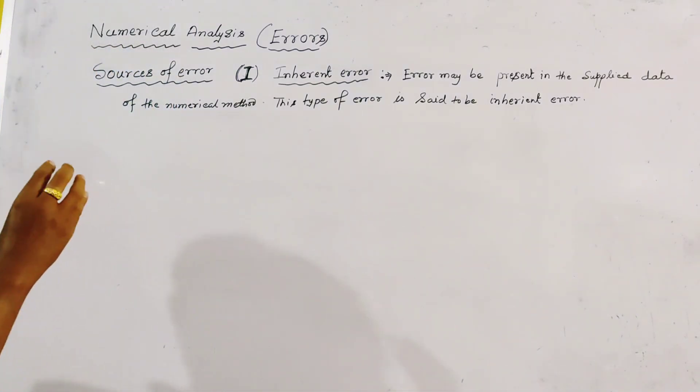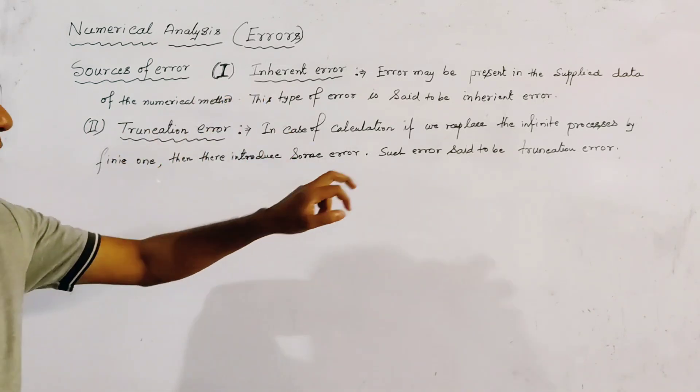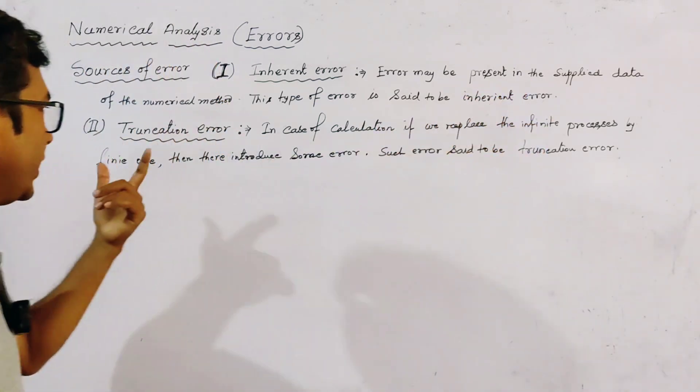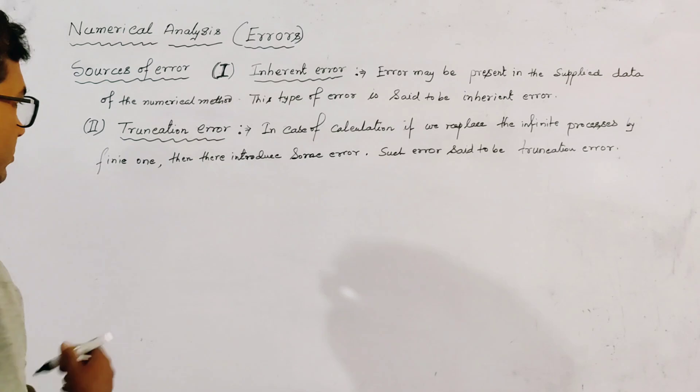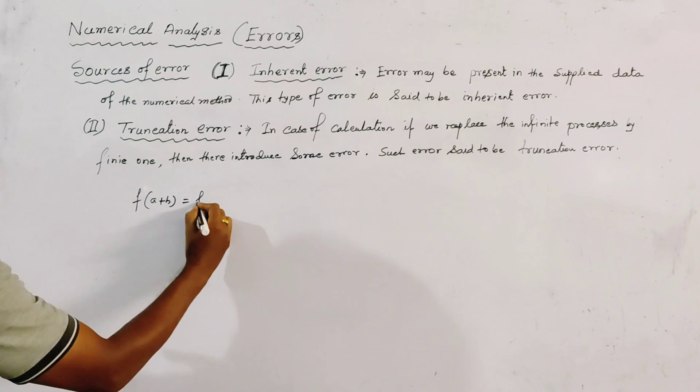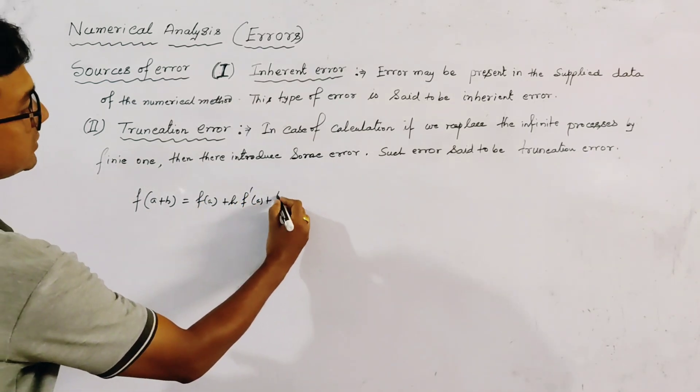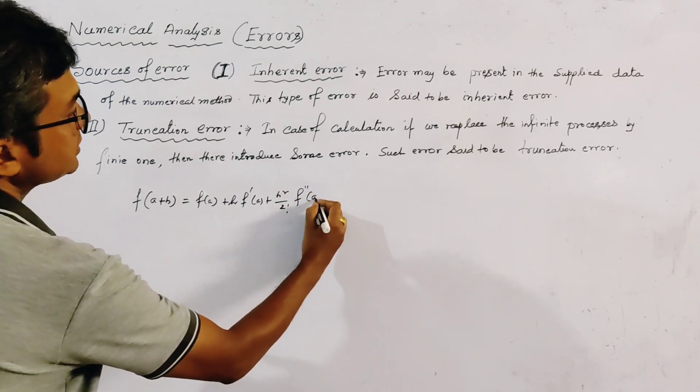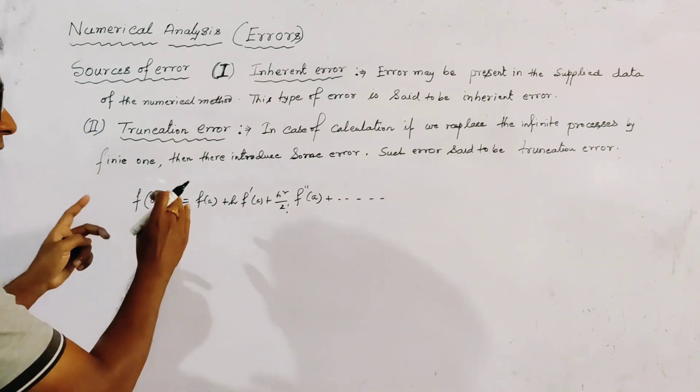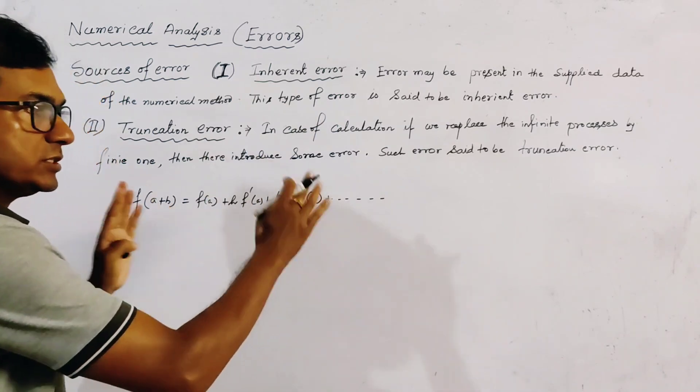And the second type is calculation error. In case of calculation, we sometimes replace an infinite process by finite one. Like if we write the Taylor's theorem, that is f of a plus h, this is equal to f of a plus h into f dash a plus h square by factorial 2 into f double dash a and so on. But practically, when we use numerically this value of f of a plus h, then we truncate some of the terms from this.